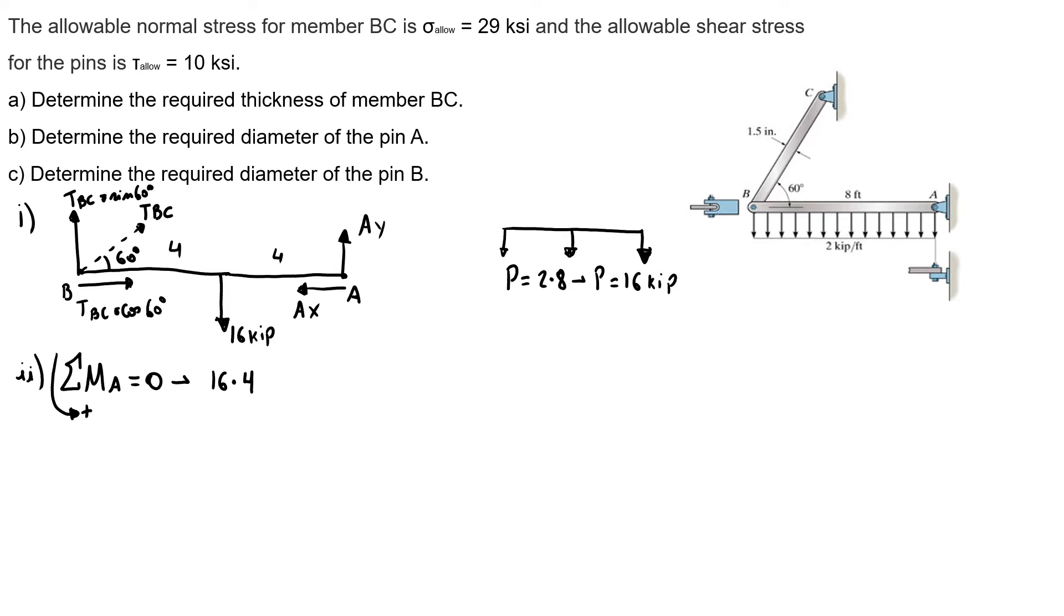So it's minus. I call TBC even though it's not a tension, times sine of 60, times my distance is 8, equals 0. So I have my force in BC times sine of 60 equals 16 times 4 over 8. So I know my tension BC times sine of 60 equals 8. So my tension BC equals 9.24 kip.